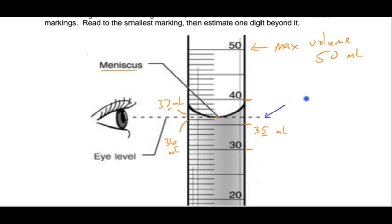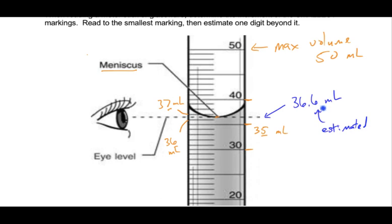I would call the volume here somewhere around 36.6 milliliters. 36.5 milliliters would also be correct — since this is estimated based on its relative position between two known volume marks, there's always a little bit of error. This would not be 36.9 or 36.1; it's clearly somewhere close to the middle. You do that for all volume measurements.